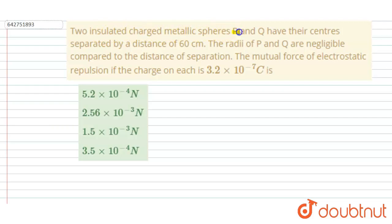Two insulated charged metallic spheres P and Q have their centers separated by a distance of 16 centimeters. The radii of P and Q are negligible compared to the distance of separation. Find the mutual force of electrostatic repulsion if the charge on each is given.